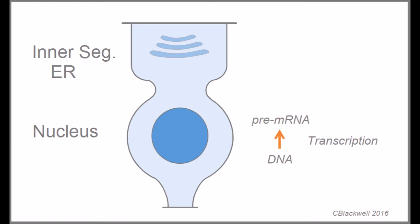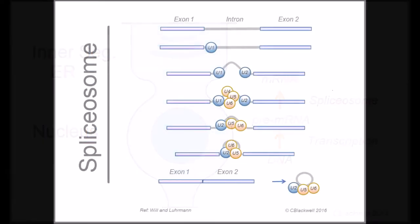In eukaryotic cells, like ours, within the nucleus, the DNA is transcribed to pre-mRNA. The pre-mRNA then undergoes a processing step before leaving the nucleus. That processing step is carried out by something called the spliceosome, possibly the single most complicated piece of biology in the cell.